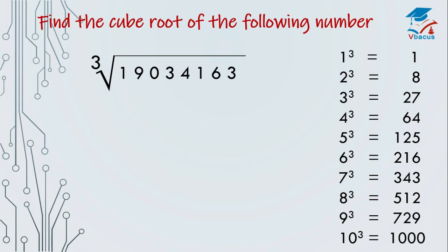Not a single digit at the unit place is repeating. Now, we have to split the number into 3 parts from the right-hand side. Let us see what is there at the unit place — it is 3. Check in the chart: 343, again 3 is there at the unit place. The cube root of 343 is 7. So the answer will come in 3 digits and 7 will come at the unit place.